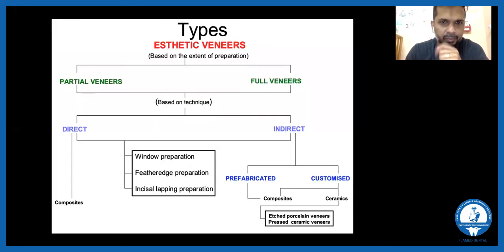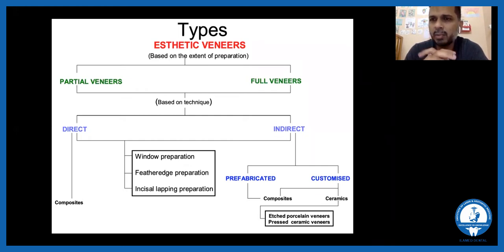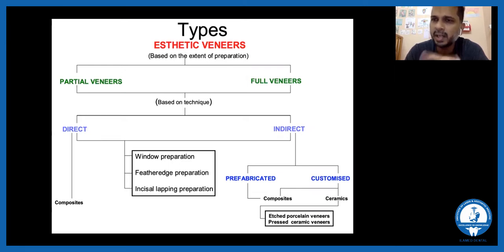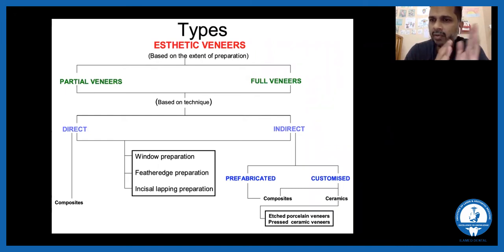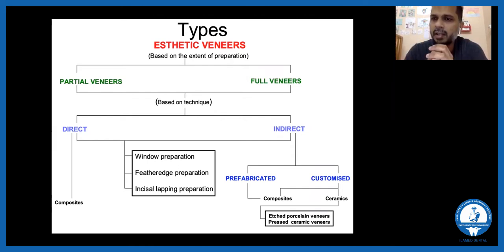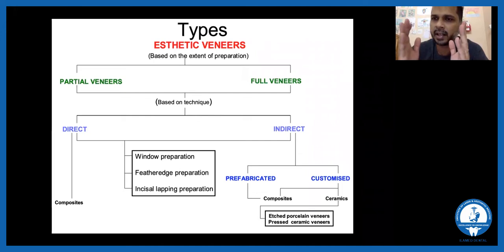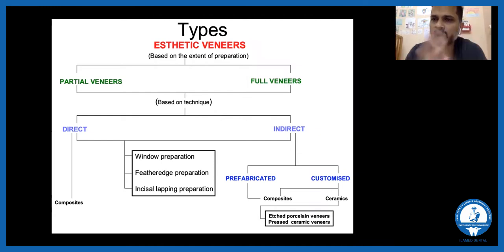Looking at the classification: we have partial veneers and full veneers. Partial veneers are not very popular — technique-wise they are more difficult and full veneers give much better aesthetics. Based on technique, there are direct veneers or indirect veneers. For direct veneers, you only have one material — composite. You prepare the labial surface of the teeth, reducing it by about 0.7–1 mm, then layer composite on top and cure it, resulting in the shade of the composite used.